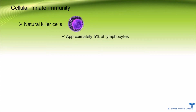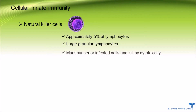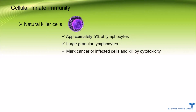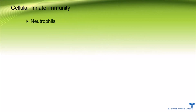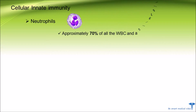In the blood, natural killer cells are approximately five percent of lymphocytes. Natural killer cells are classified as large granular lymphocytes. They mark cancer or infected cells and kill by a cytotoxicity mechanism. In humans, natural killer cells usually express the surface markers CD16 and CD56.